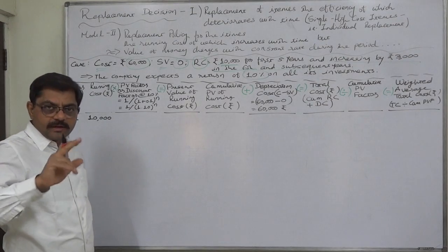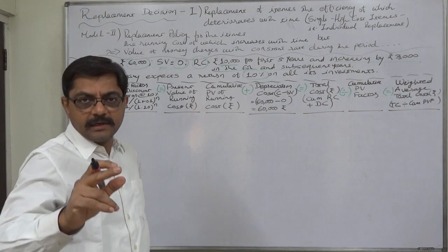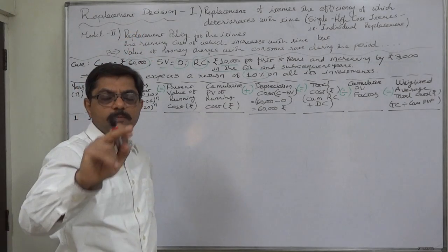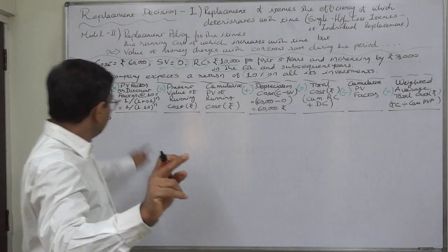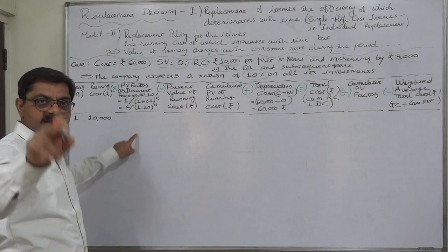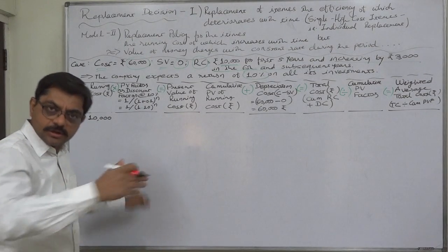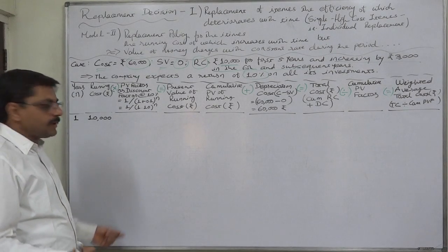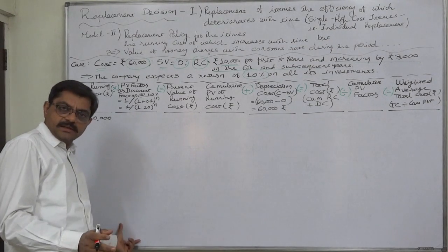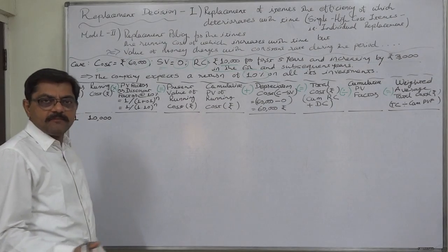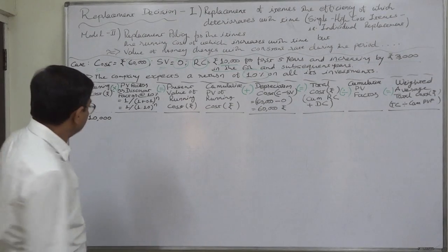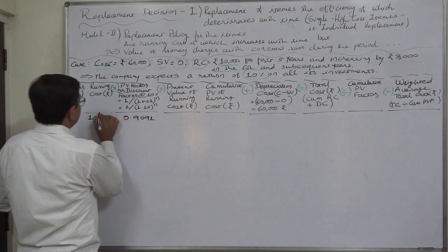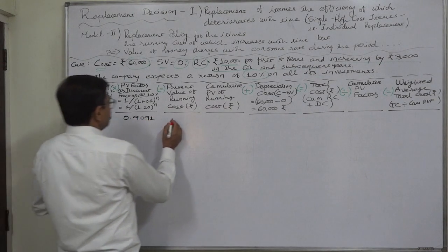I have already calculated the present value or discount factors. You can also calculate for 8 to 10 years on a simple calculator: it is a continuous process — 1 divided by 1.1 equals for the first year, then press equals again for the second, equals again for the third, and so on. So it can be calculated continuously for many years.